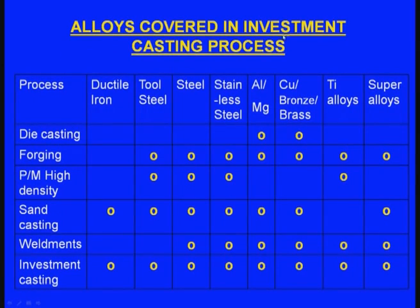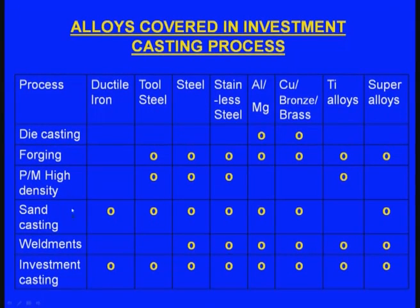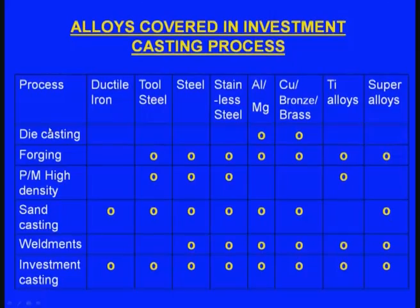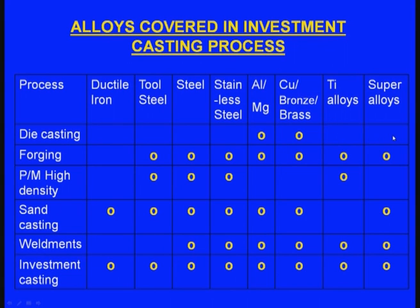These are the alloys covered in investment casting process. Comparing different manufacturing processes: in die casting, aluminum, magnesium alloys, copper, bronze, brass can be cast, but ductile iron, tool steel, steel, titanium alloys, and super alloys cannot be cast using the die casting process.